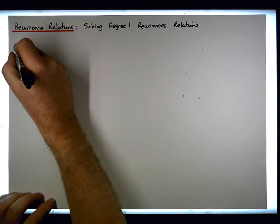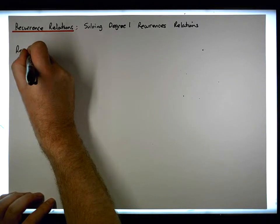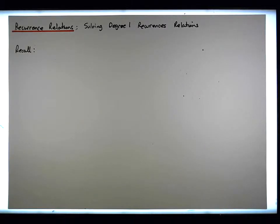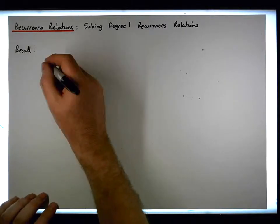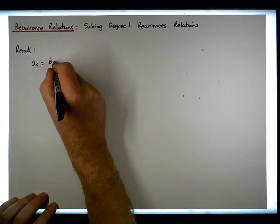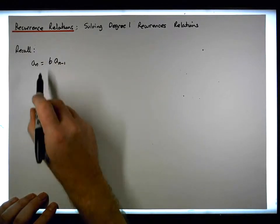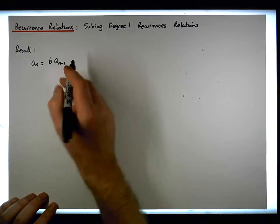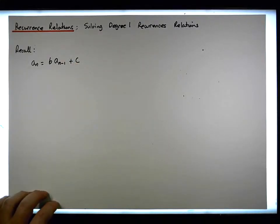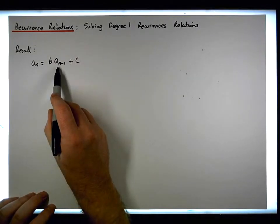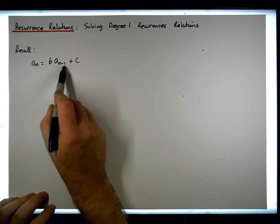Let's recall from a previous video where we developed a closed-form solution to degree one recurrence relations. We have a recurrence of the form a_n equals b times a_{n-1}, so the nth term is defined to be equal to some constant times the previous term. It's degree one because the nth term is defined only in terms of the previous term.